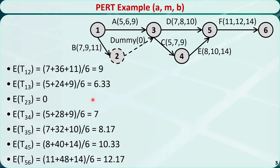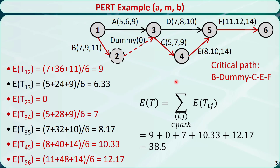For this example, we know from previous videos that if the durations are known precisely, the critical path is B, dummy, C, E, and F, with a duration of 38 days, which is the total length of the project. Now assume the critical path will not change even if we consider the uncertainties. Then we can calculate the duration of the critical path by adding up all the expected durations of the activities on the critical path. It is equal to 38.5 days.